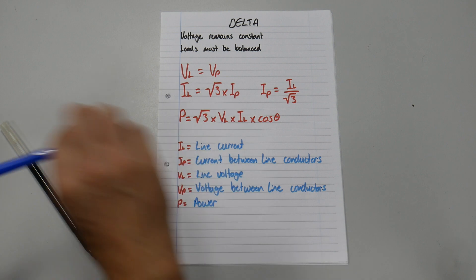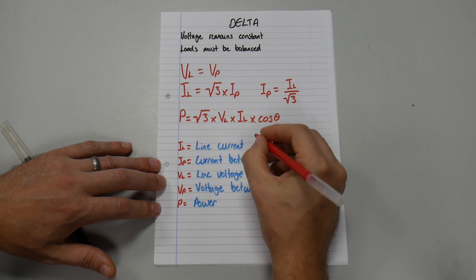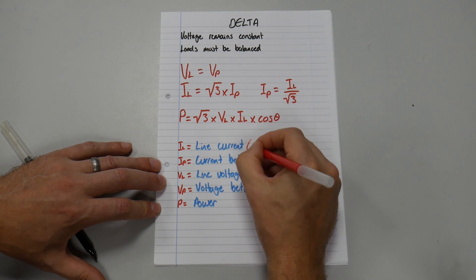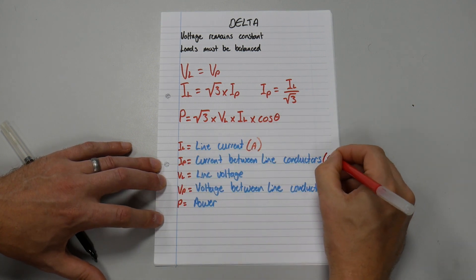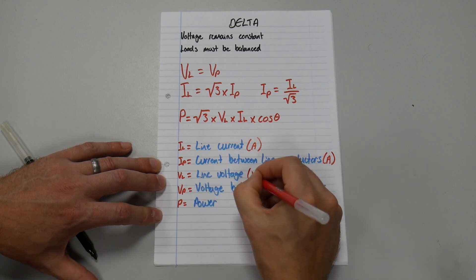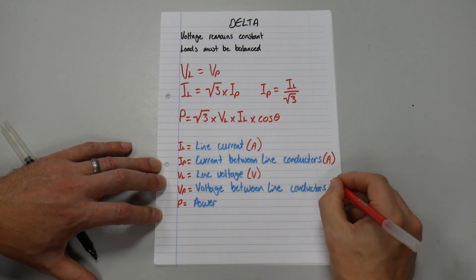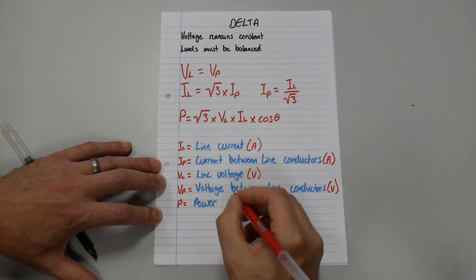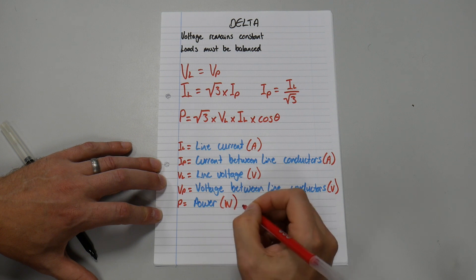And then we can write down the SI units for each. Current is amps. IP is current, measured in amps. VL is voltage, measured in volts. VP is voltage, measured in volts. And power is measured in watts (W).